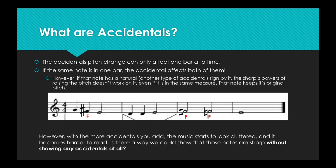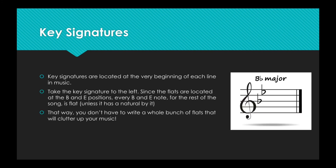However, there is a problem with adding too many accidentals to your music. With more accidentals, the music starts to look cluttered and becomes harder to read. Is there a way we could show that these notes are sharp without showing any accidentals at all? We can, using key signatures. Key signatures are located at the very beginning of each line in music. Since the flats are located at the B and E positions, every B and E note for the rest of the song is flat, unless it has a natural by it. That way, you don't have to write a whole bunch of flats that will clutter up your music.